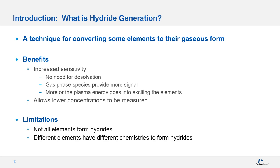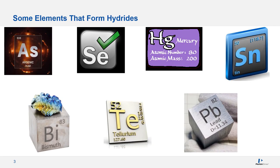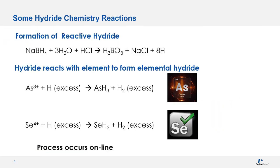Unfortunately, hydride generation does have limitations. First, not all elements form hydrides. Second, different elements have different chemistries to form hydrides, meaning different sample preparations are required. Several elements commonly form hydrides in ICP OES — arsenic and selenium are the most common requests for lower concentration measurements. Mercury, tin, bismuth, tellurium, and lead also form hydrides.